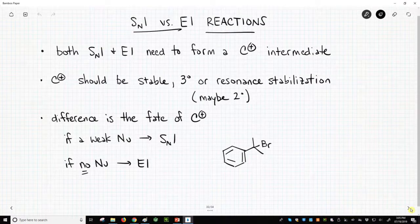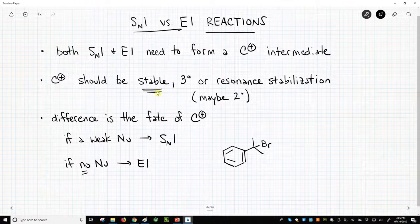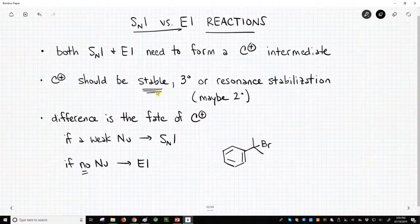Both SN1 and E1 reactions have to form a carbocation. The hardest part about making a carbocation is that it has to be stable. That means it should be tertiary, maybe perhaps secondary. Secondaries aren't great, or maybe resonance stabilization, but it needs to be a good carbocation.